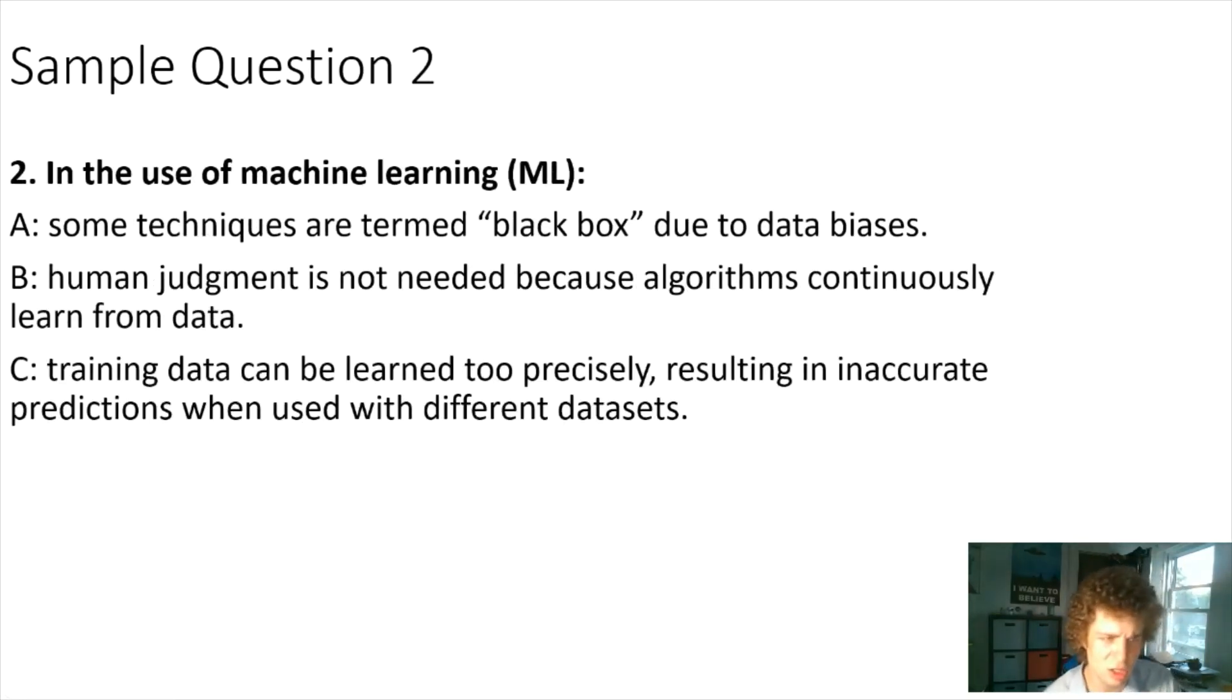For number two, in the use of machine learning, some techniques are turned to black box due to data biases. This is not true, even though some techniques are black boxes, not due to data biases but due to training procedure. Human judgment is not needed because algorithms continuously learn from data. I still think there's some form of human judgment needed on inputs and outputs. But C is definitely true: training data can be learned too precisely resulting in inaccurate predictions on different data. This is describing exactly overfitting, one of those very important terms you should know about machine learning for the CFA exam.